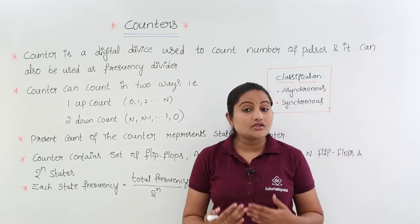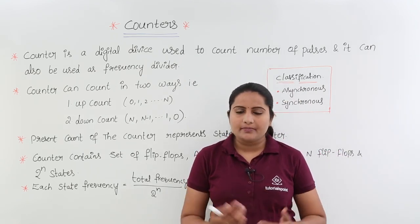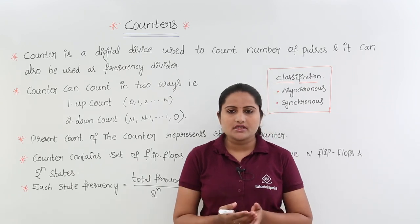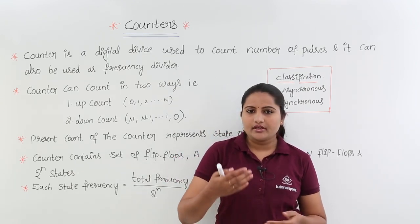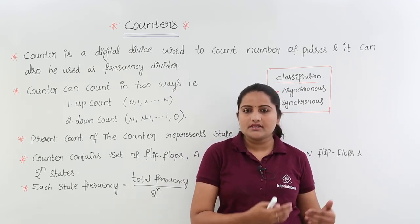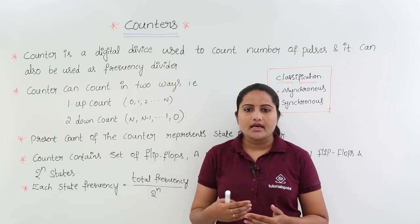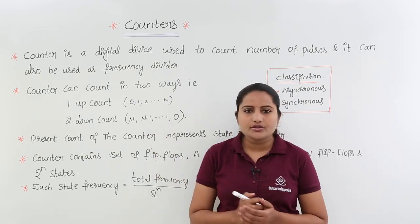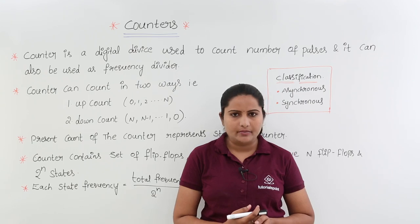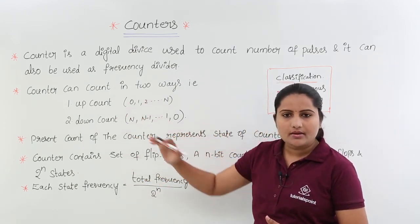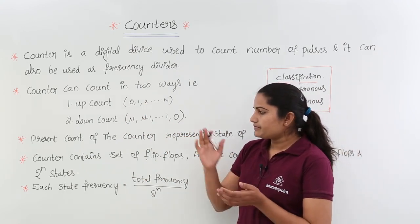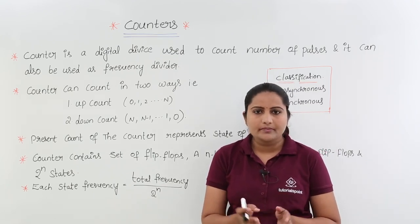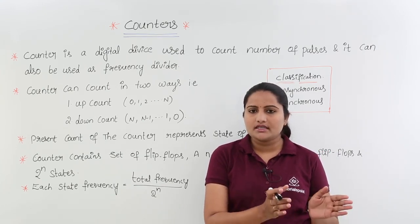Coming to down counters, the exact application of down counters can be seen in space-related applications. When you see any missile or rocket launching, there we see this down counting — they start from a point, keep decreasing the count, and when 0 is reached they start launching. Like this we use up counter and down counter in real-time applications, and in next classes we are going to design them.